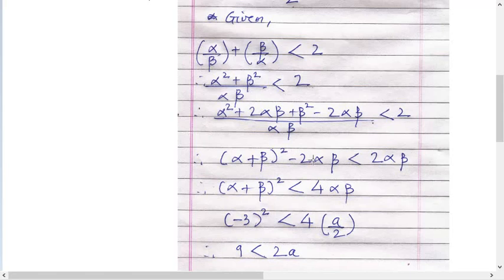Alpha plus beta the whole square minus two alpha beta. Beta will go on the other side, so less than two alpha beta. Bring this two alpha beta on the other side, so alpha plus beta the whole square is less than four alpha beta.